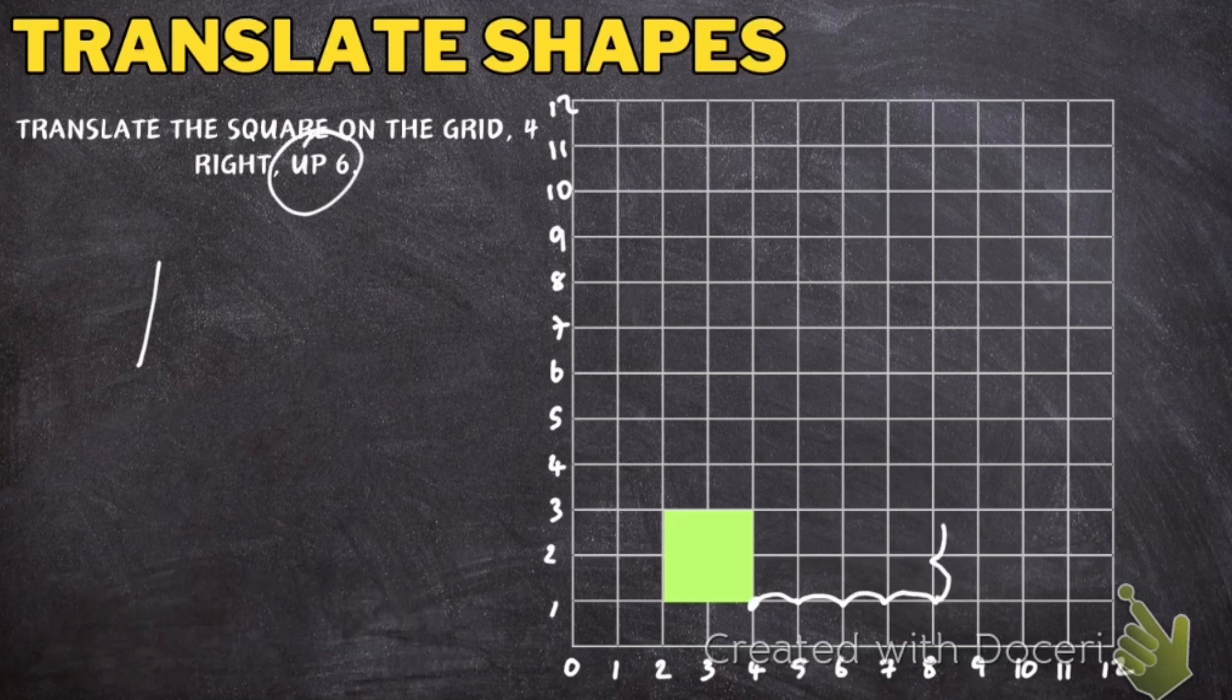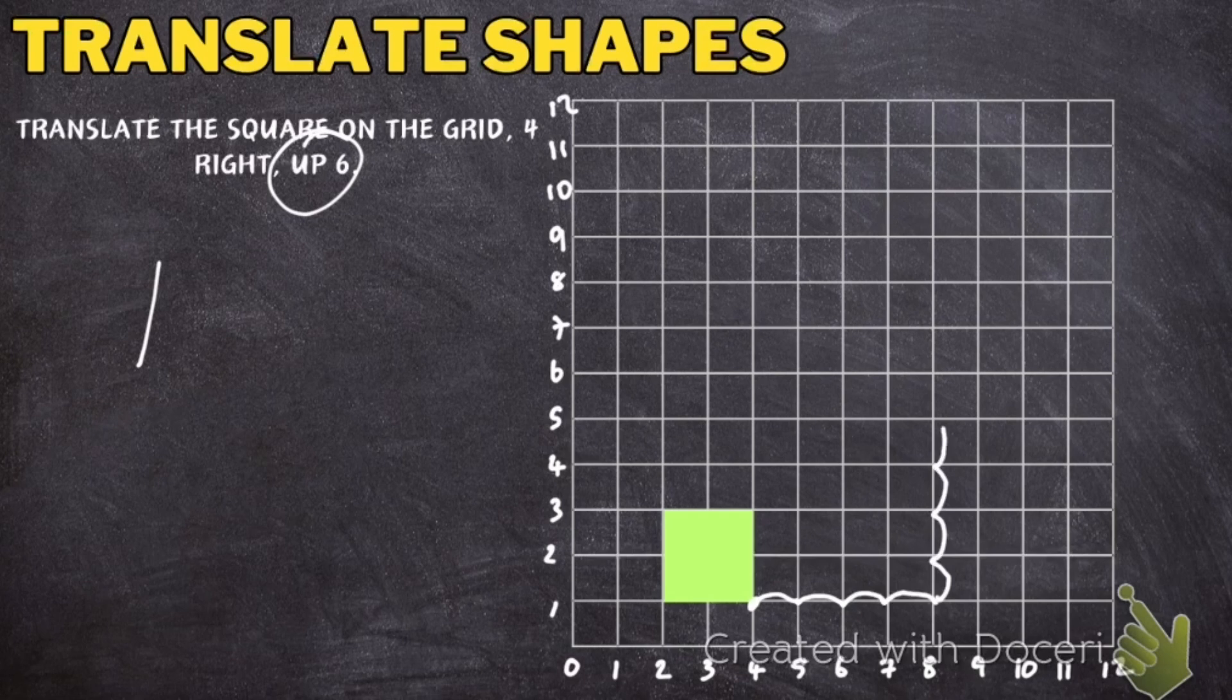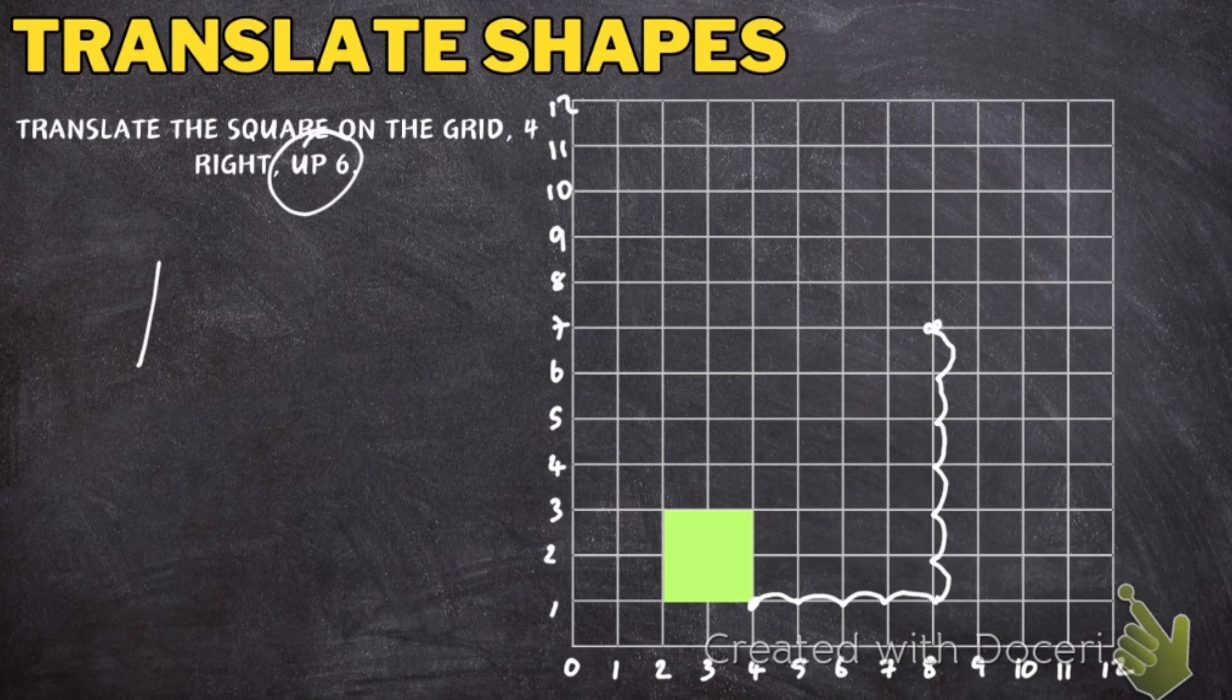So I'm going to go 1, 2, 3, 4, 5, 6. So now that corner, the point of that square, is going to be there.